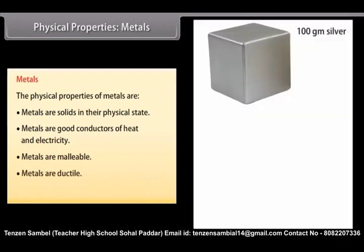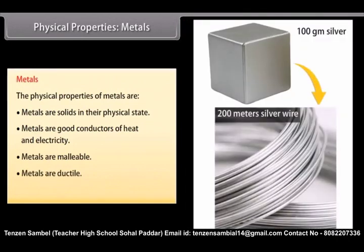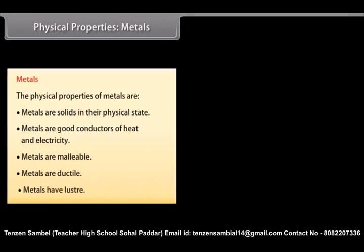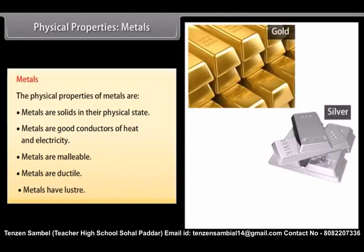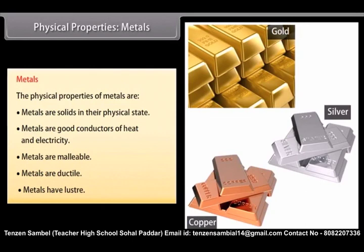Ductile. Metals can be drawn into wires. For example, 100 grams of silver can be drawn into a thin wire of about 200 meters long. Luster. Metals reflect light from their shiny surface. They can also be polished. For example, gold, silver and copper are metals with a shiny surface and can be polished.